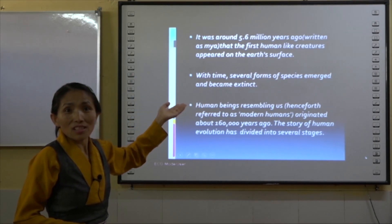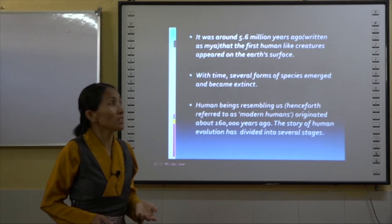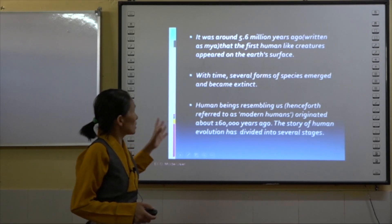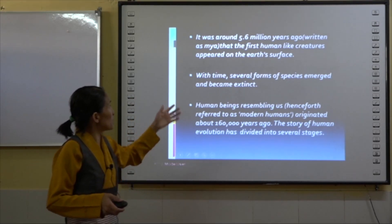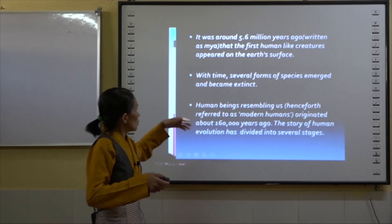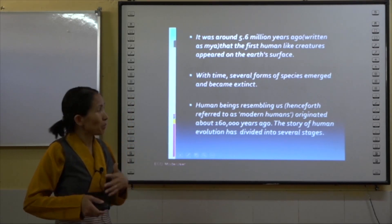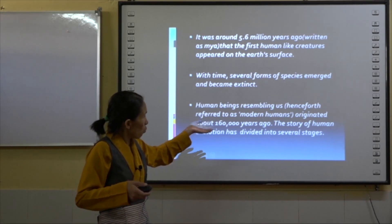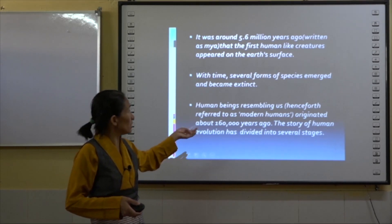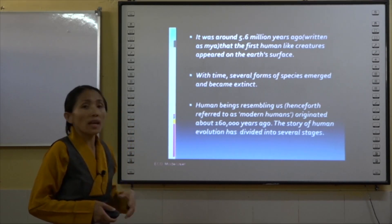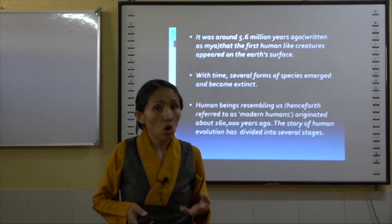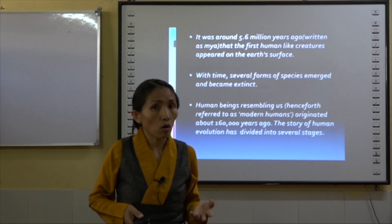The answer is: it was around 5.6 million years ago that human-like creatures appeared on the earth's surface. With the passage of time, several forms of species emerged and then became extinct. Human beings who resemble us were known as modern humans, and they originated about 160,000 years ago. The story of human evolution has been classified into several stages — it has been a very long story for all of us to learn.